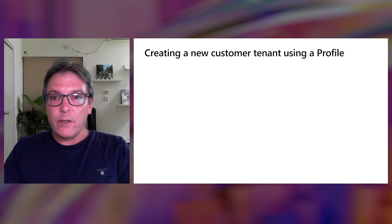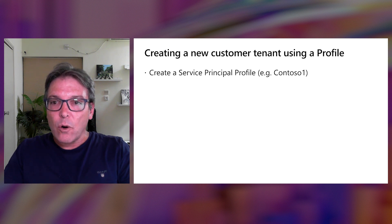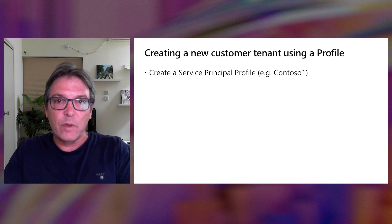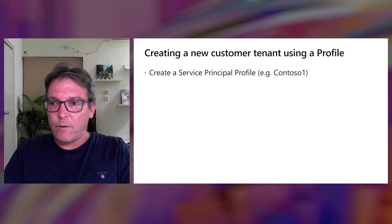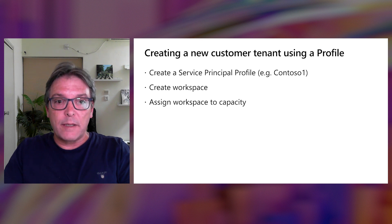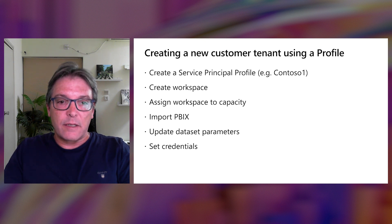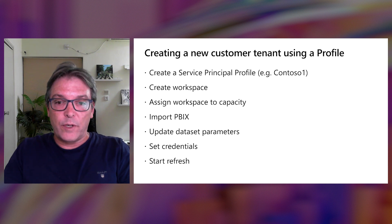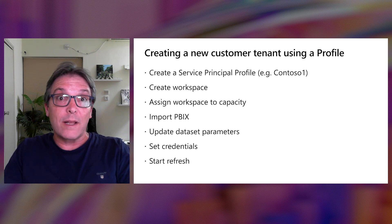So, how do you create a new customer tenant using a service principal profile? The first step is to execute an API call to create a new service principal profile with its display name. That first call is made under the identity of the parent service principal, but this is the only one. All remaining Power BI REST API calls — create workspace, assign workspace to capacity, import PBIX, update dataset parameters, set credentials, and start refresh — can be made under the identity of the service principal profile that was just created. That's basically what you need to do to create a new customer tenant, and you can do it for hundreds of thousands of customer tenants using only one service principal.